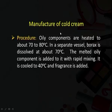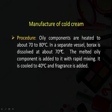The manufacture of cold cream requires a specific technique. First, the oily components — mineral oil and beeswax — are heated to about 70–80°C. In a separate vessel, borax is dissolved in water at about 70°C. Then the melted oily component is added to the borax solution rapidly with constant stirring. The mixture is cooled to about 40°C and then fragrance is added — fragrance is not added before because at high temperature the perfume will evaporate. Finally, it is packed into tubes, bottles or whatever container is used.